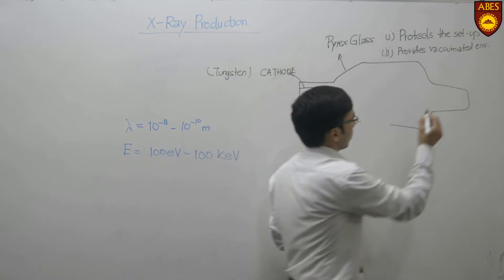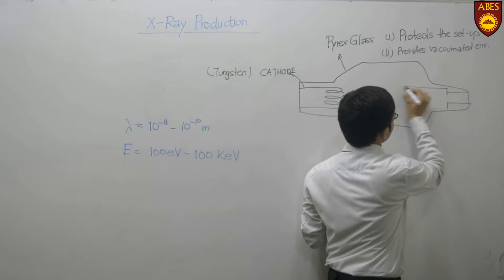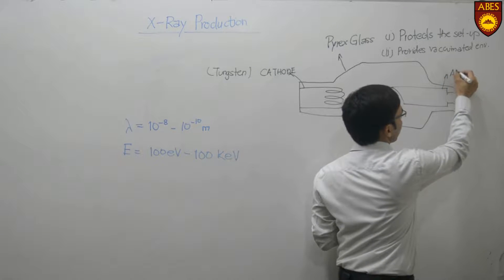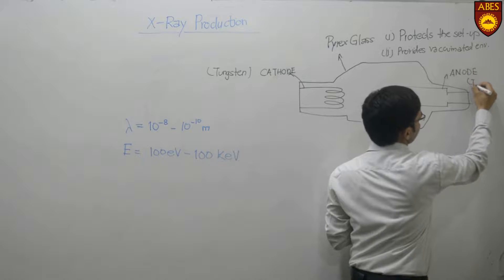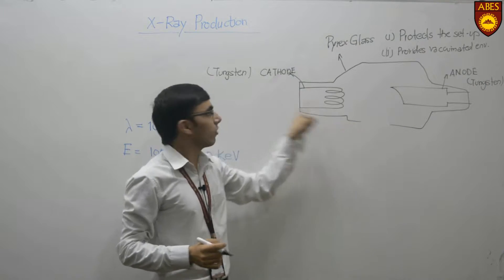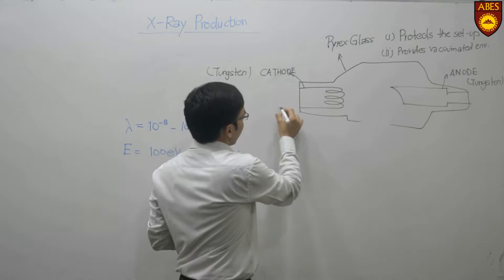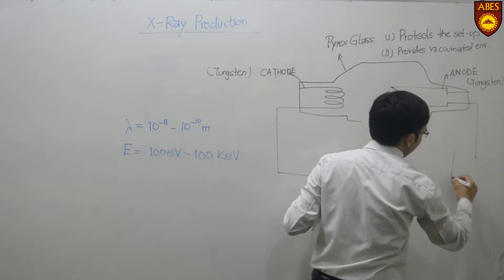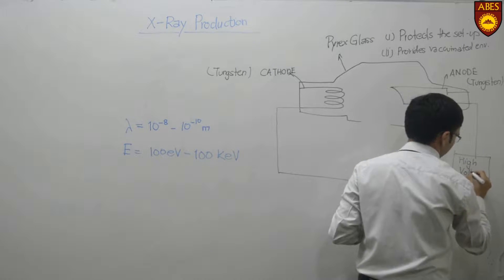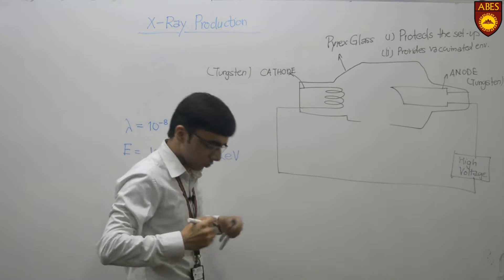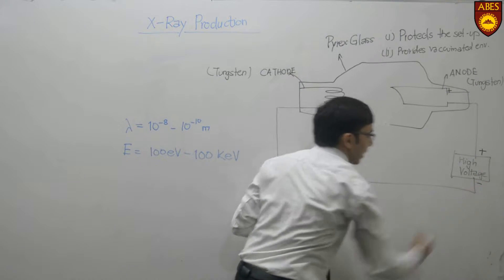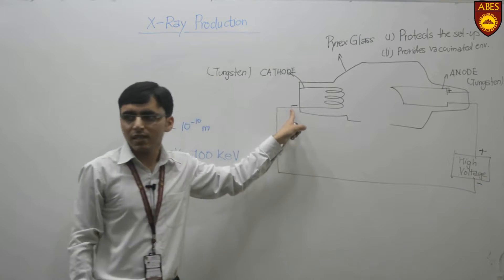We move on to the third component which is the anode. The anode is also made up of tungsten. The fourth component is a high voltage source. The positive terminal of the high voltage source is connected to the anode, so the anode is positive, and the negative terminal is connected to the cathode.